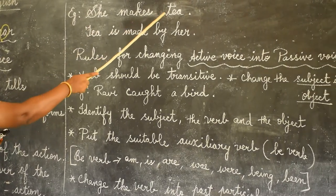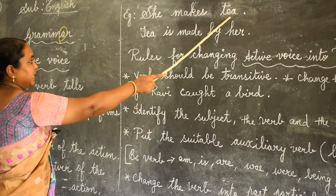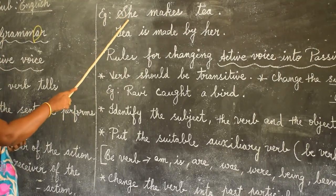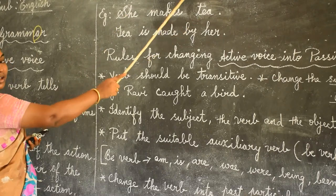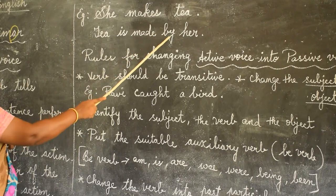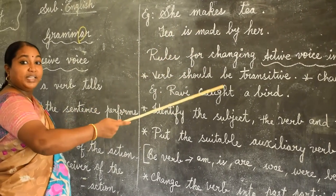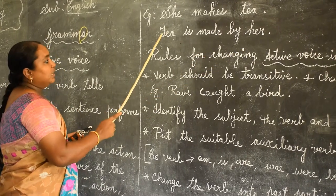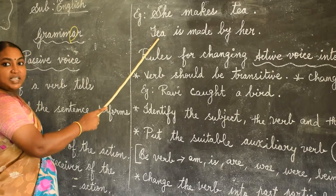She makes tea. Here we are giving importance to the subject. In passive form: tea is made by her. Here the subject is the receiver of the action.